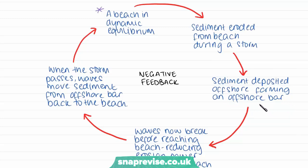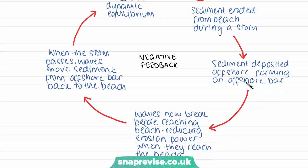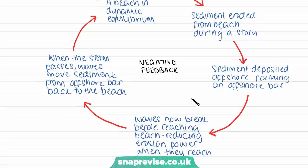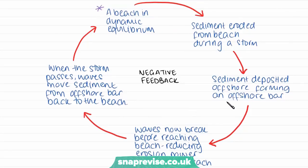An offshore bar is a bar of sediment or sand out in the sea. Once this offshore bar has formed, the waves that were originally hitting the coast are now reaching the bar, reducing the erosion power of the waves when they reach the beach — they've hit the bar and are therefore weaker by the time they reach the actual coast. When the storm passes, the waves will move the sediment from the offshore bar back to the beach, returning to a dynamic equilibrium through a cycle of negative feedback.